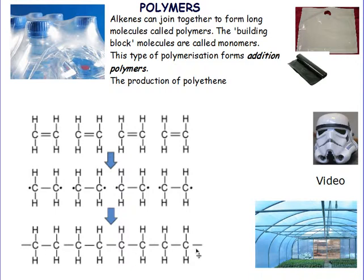This gives us a long chain of carbon atoms. You notice that the four groups of the two carbons from the original ethene molecule — in this case four hydrogens — are still the same. Those side chain groups have not changed. So this is polyethene.